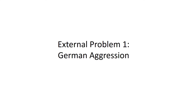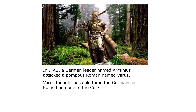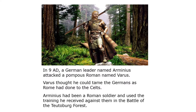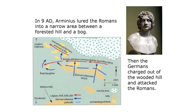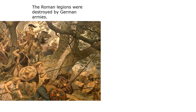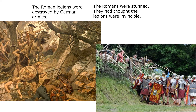The number one external problem was German aggression. In AD 9, a German leader named Arminius attacked a pompous Roman named Varus. Varus thought he could tame the Germans as Julius Caesar had done to the Celts. Arminius had been a Roman soldier and used his training against the Romans in the Battle of the Teutoburg Forest. Arminius lured the Romans into a narrow area between a forested hill and a bog, then the Germans charged out and destroyed the Roman legions. This marked the first time the Roman Empire retreated from territory it had conquered and could not recapture it.